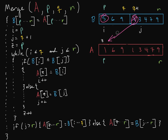We increment J and also increment Z. Now we check again — the new right element is three. Is five less than or equal to three? Obviously not.